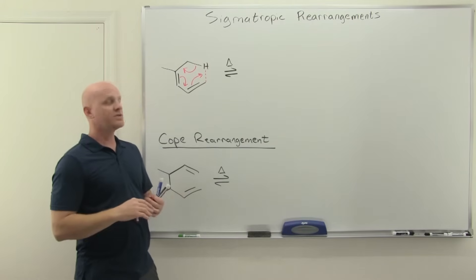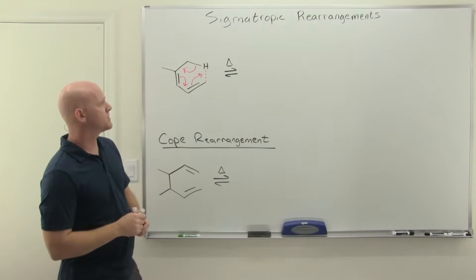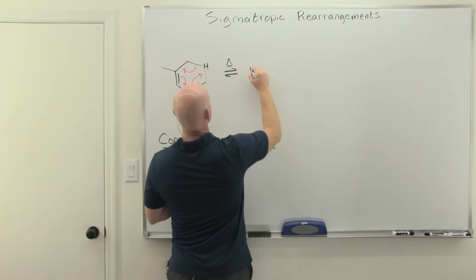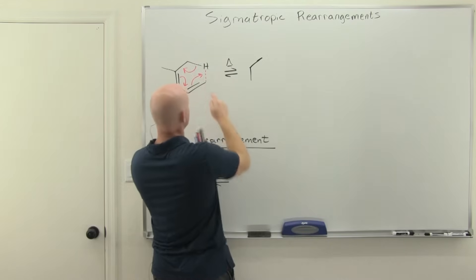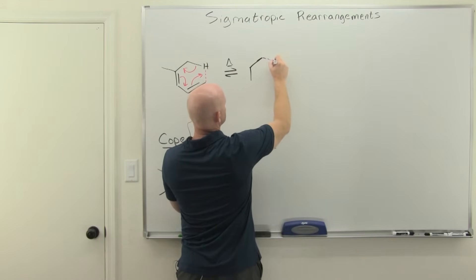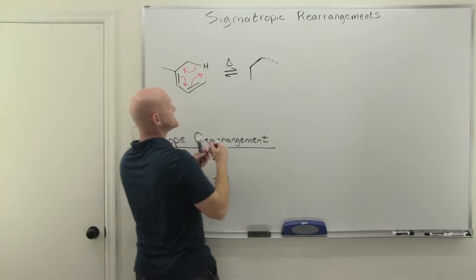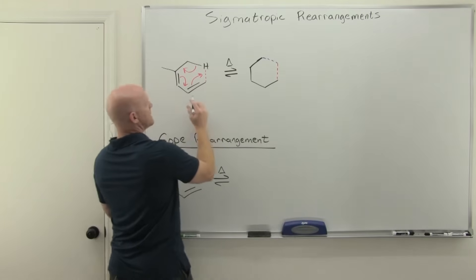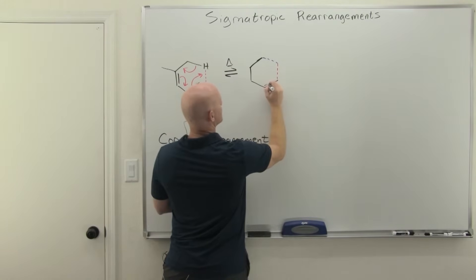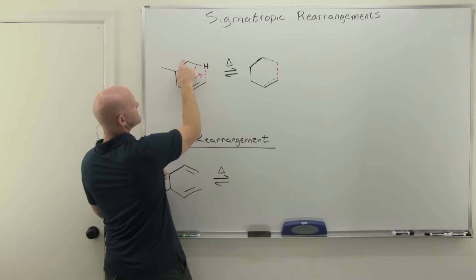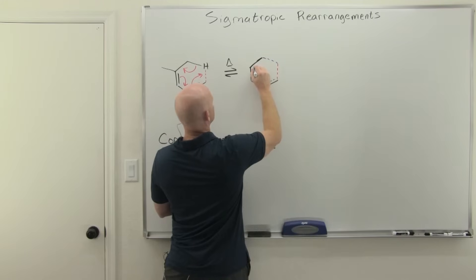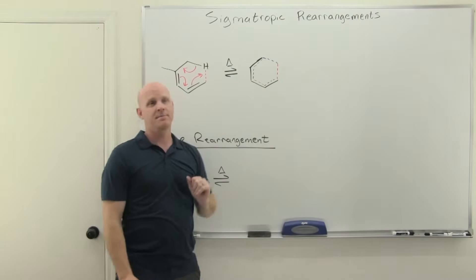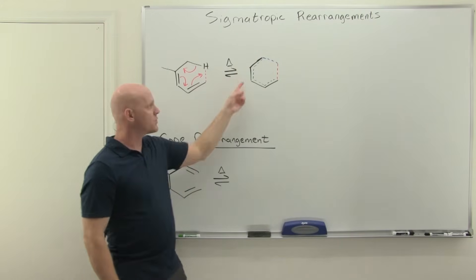Where those sigma bonds are located in relation to each other, there's a numerical system by which we'll signify our sigma-tropic rearrangement. I want to draw out the transition state because it's going to look somewhat like a six-membered ring. We've got a partial bond here that's breaking, a partial bond that's forming, and a partial pi bond that's breaking — forming a complete ring of partial bonds in the transition state.